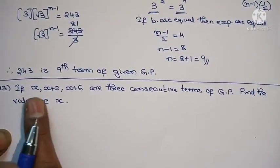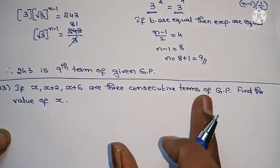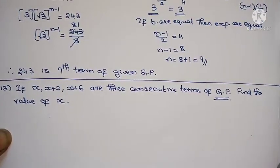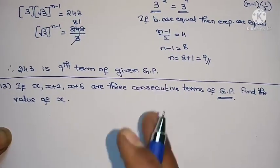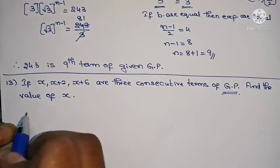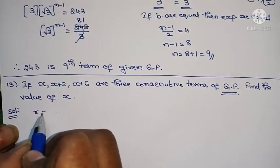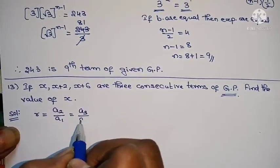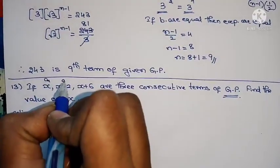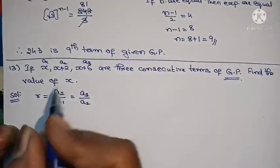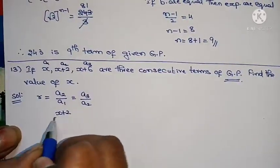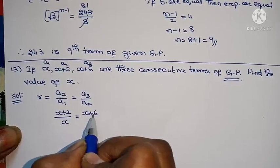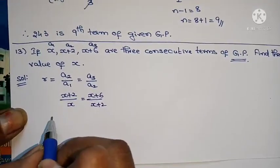Question: If x, x+2, x+6 are 3 consecutive terms of a GP, find the value of x. For GP, the common ratio R gives us: A2/A1 equals A3/A2. Taking A1 as x, A2 as x+2, A3 as x+6, substitute the values.